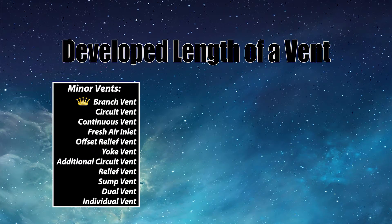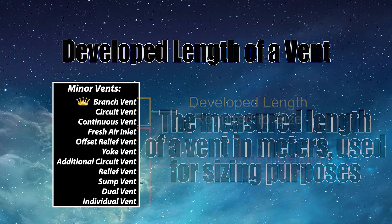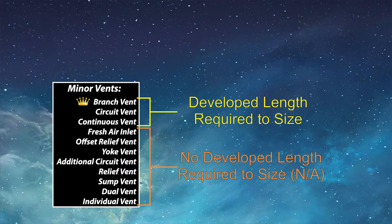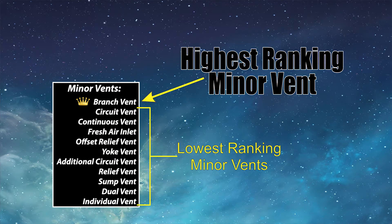What is developed length? That is a measurement of the vent pipe that's used for sizing the vent. However, only three of these vents actually require developed length — all the rest do not need it to size the vent. The only three minor vents that require developed length are the branch vent, the circuit vent, and the continuous vent. It's important to note that anything from the individual vent up to and including the circuit vent are the lowest ranking vents — none of them outrank each other until we get to the branch vent, which is actually a rank above all the rest of them.